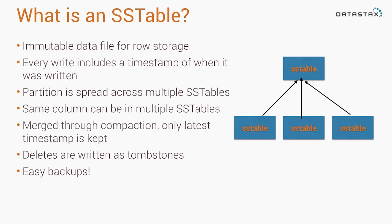SSTables are immutable files on disk. As we write SSTables to disk, we're going to have a bunch of really small ones. As an optimization, we have a process called compaction, which takes small SSTables and merges them into bigger ones. If we've written a row at time one and a row at time two, when we merge those tables together, we take the row written at time two — based on the included timestamp — and keep that, discarding the old one. This keeps Cassandra fast and avoids having to check many SSTables to find the same piece of data.